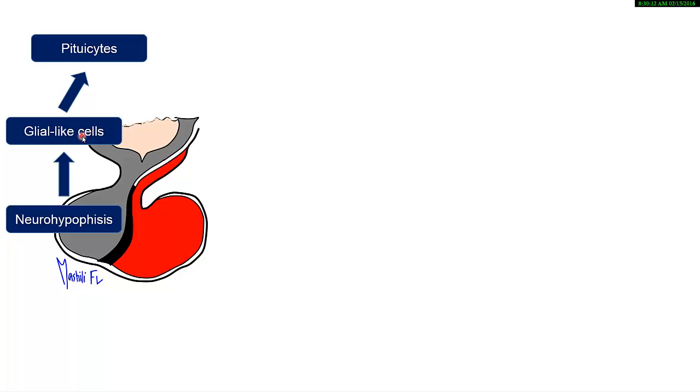You also have cells that are called the pituicytes. The pituicytes are supporting a series of nerves that goes into the posterior pituitary. As we said, you cannot discuss the pituitary without discussing the hypothalamus.